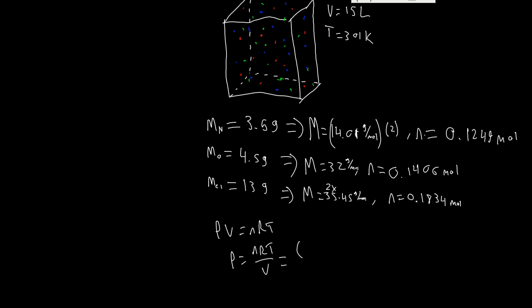So, equals for N, 0.1249 plus 0.1406 plus 0.1834 moles times R, universal gas constant 0.08206 liter atmospheres per mole. And that's all going to be divided by a straight line. It's all going to be divided by 15 liters.